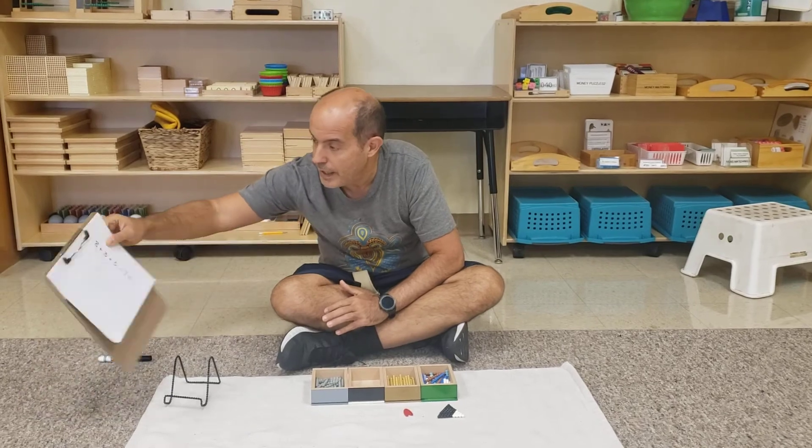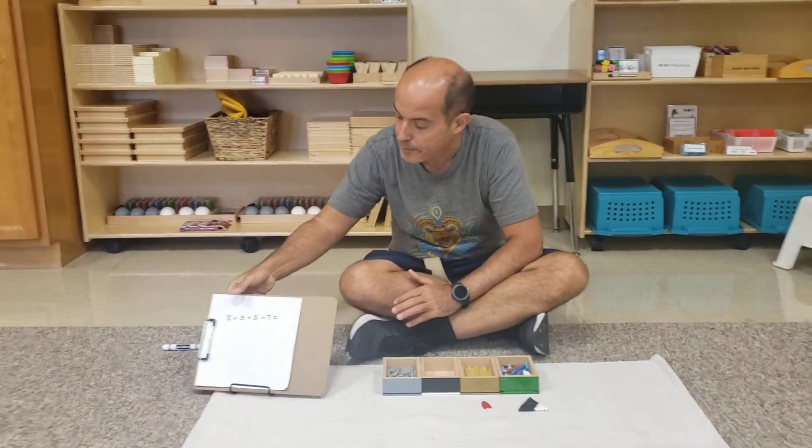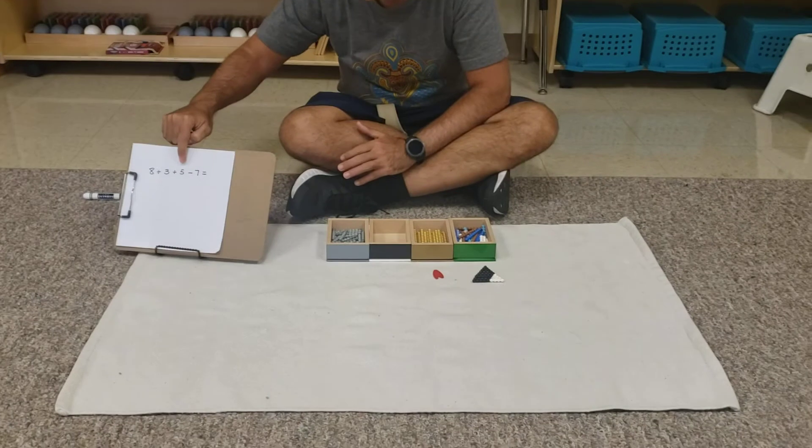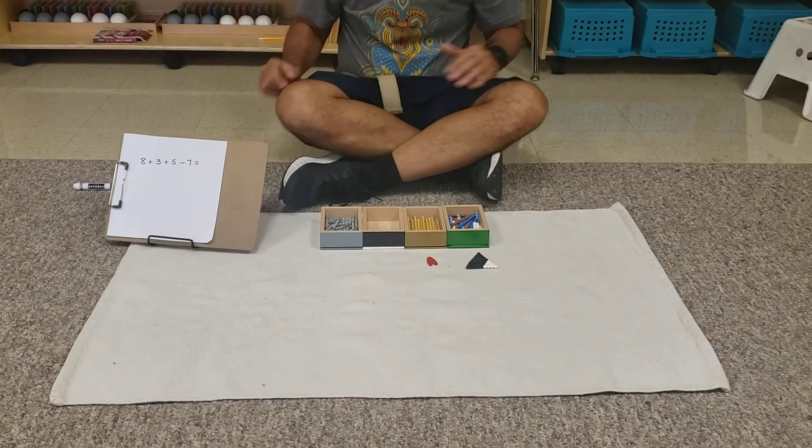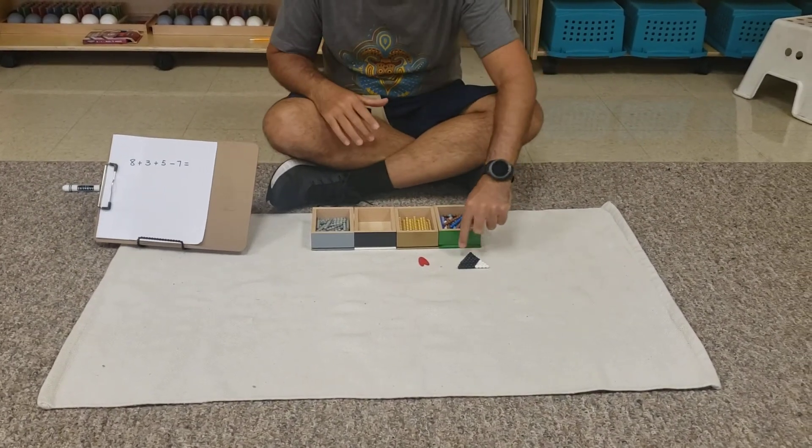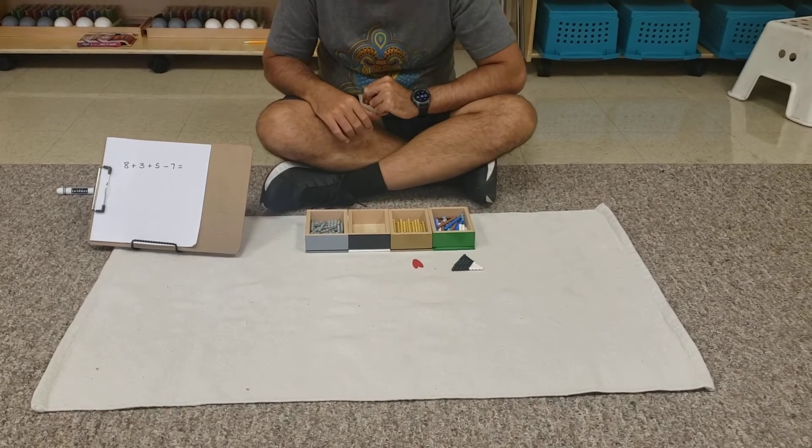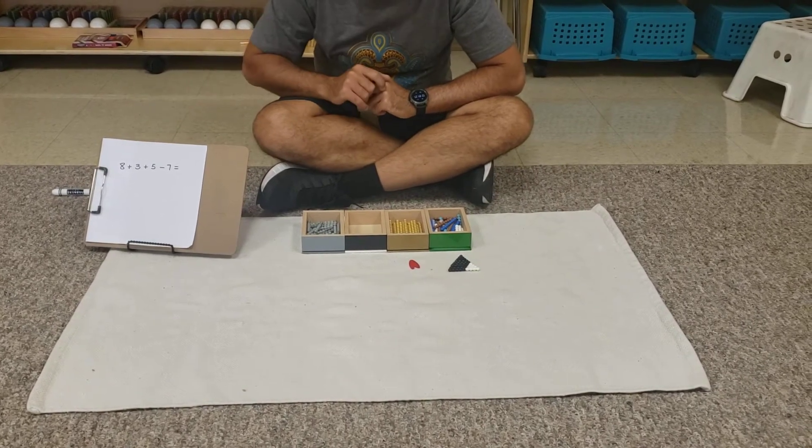So here I have our equation for today. It's going to be 8 plus 3 plus 5 minus 7. So I already set up here our pyramid like we did with the addition snake game and I'm going to start preparing my snake.